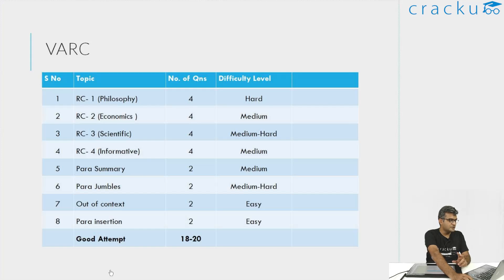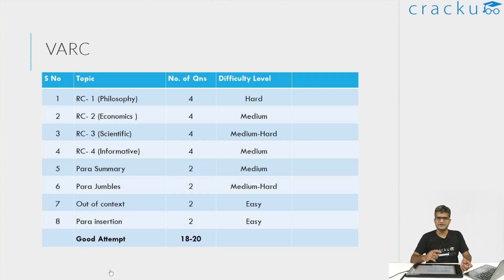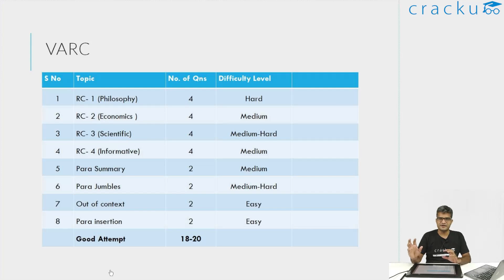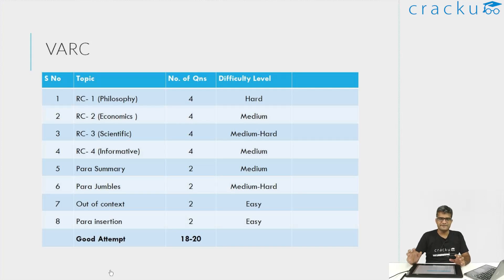The second RC was about economics — specifically about inflation. I found this to be one of the easier ones out of the four, because I was personally interested in economics and could understand most of what was mentioned. The questions followed directly from the arguments given in the passage, so this was definitely a doable set. The third reading comprehension was about history — agriculture and hunter-gatherers. I felt it was easy to read, but when I was actually attempting it, I was getting some questions wrong, so the questions were more on the difficult side although the paragraph was easy to read.